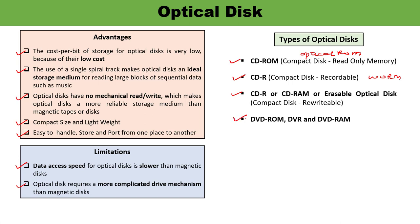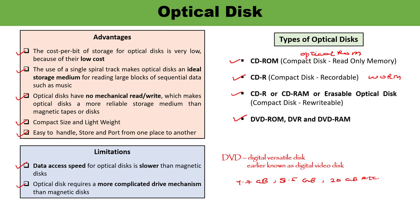Next are DVD-ROM, DVR, and DVD-RAM. DVD stands for Digital Versatile Disc, earlier also known as Digital Video Disc. DVD stores much more data than CD-ROM; its capacity can be 4.7 GB, 8.5 GB, 20 GB, and more. The capacity depends entirely on its configuration — whether it is single layer or double layer, and single-sided or double-sided.